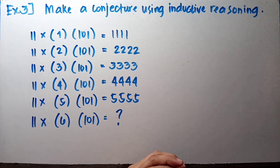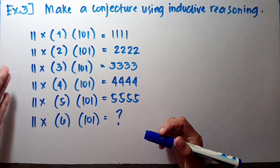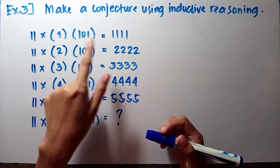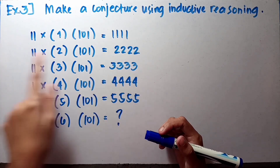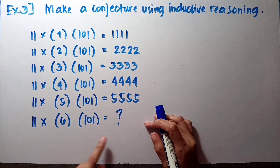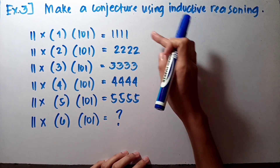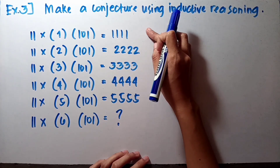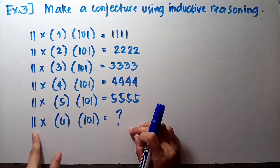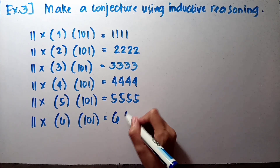For our last example on inductive reasoning, let's answer example number 3. We have a series of equations: 11 times 1 times 101 equals 1,111; 11 times 2 times 101 equals 2,222; 11 times 3 times 101 equals 3,333; and so on up to 11 times 5 times 101 equals 5,555. Based on the pattern in the answers, without even calculating, we can predict that 11 times 6 times 101 will be 6,666.